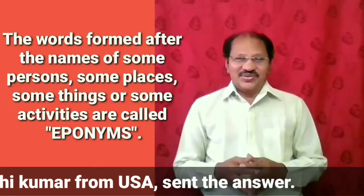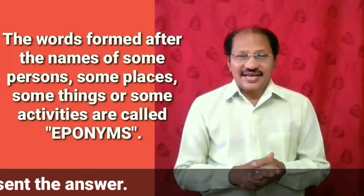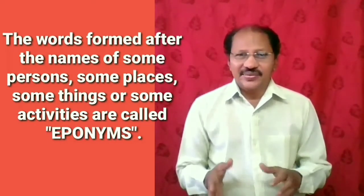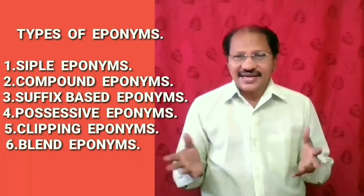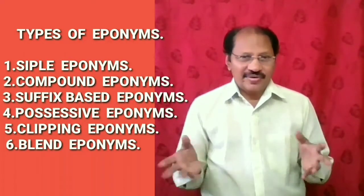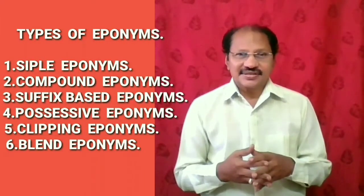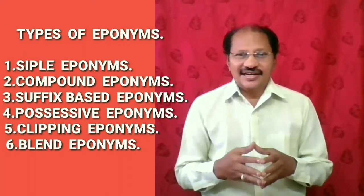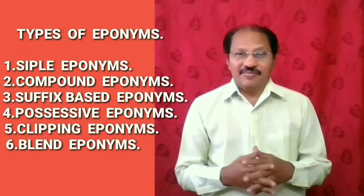Now let us go to the classification of eponyms. As per one best classification, the total eponyms are divided into six types: the first one is simple eponym, the second one is compound eponyms, the third is suffix-based eponyms, the fourth is possessive eponyms, the fifth is clipping eponyms, and the sixth type is blend eponyms.